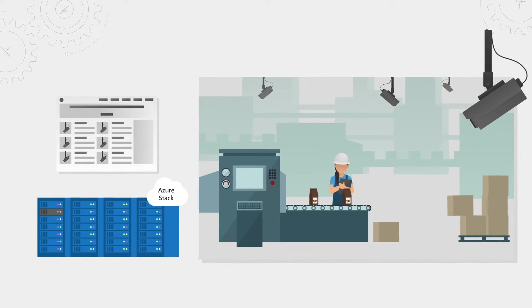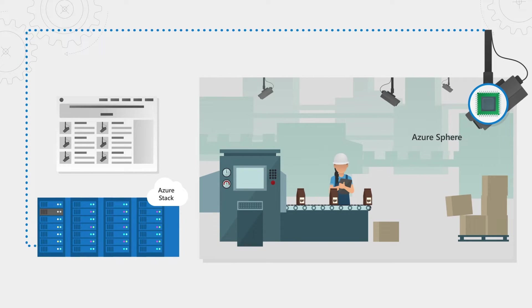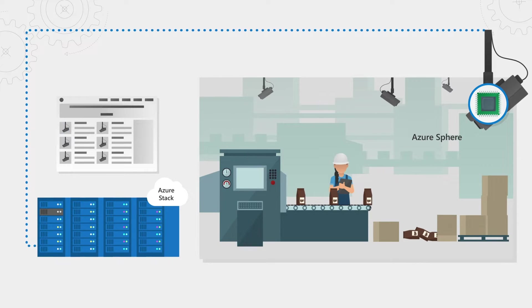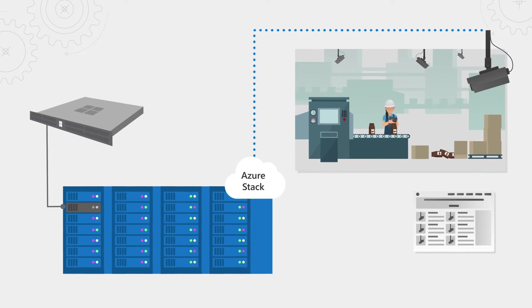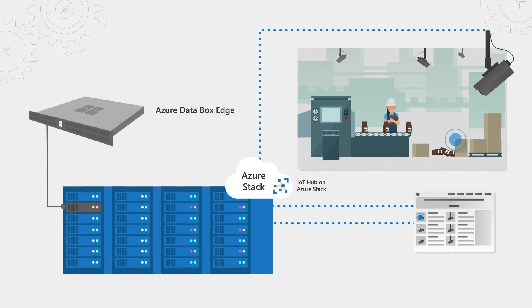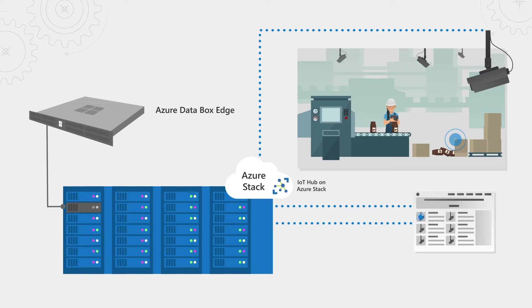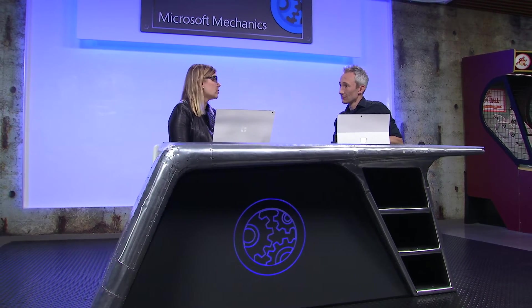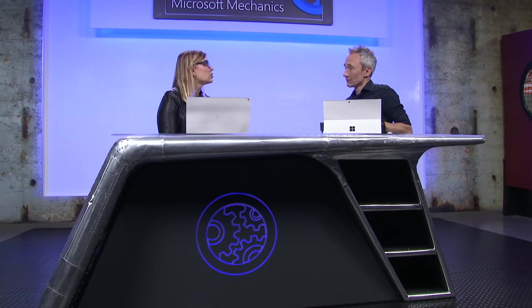IoT devices collect data — you can use Azure Sphere-based devices for security at the silicon level, or use your own specialized devices. Data Box Edge handles data caching and specialized compute, while device management is done through IoT Hub on Azure Stack. We've seen Azure Stack and Data Box Edge running in ocean liners or even trucks for emergency response, allowing customers to take advantage of Azure capabilities without an internet connection. You can also augment all of this with Azure in the public cloud for additional capabilities and global reach.